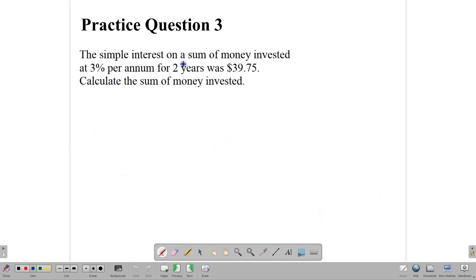Now, let's look at another question still. Simple interest on the sum of money invested at 3% per year for two years is $39.75. So we are told that the interest is this, and the time is 2 years, and the rate is 3%. And our job is to find the principal, the money invested. That's the principal. So we write down our formula. PRT over 100 is equal to interest.